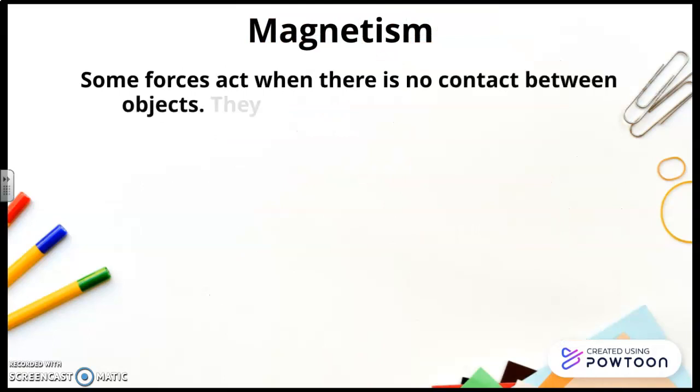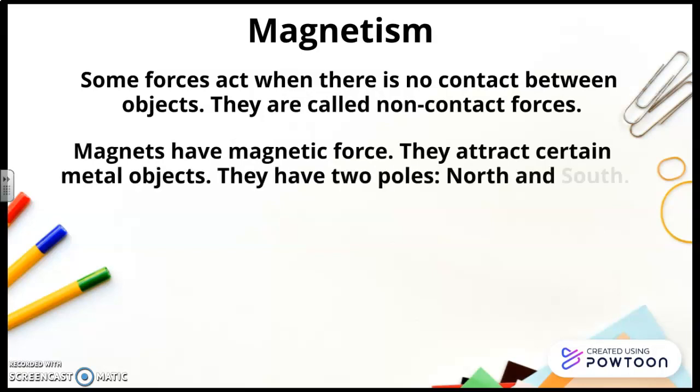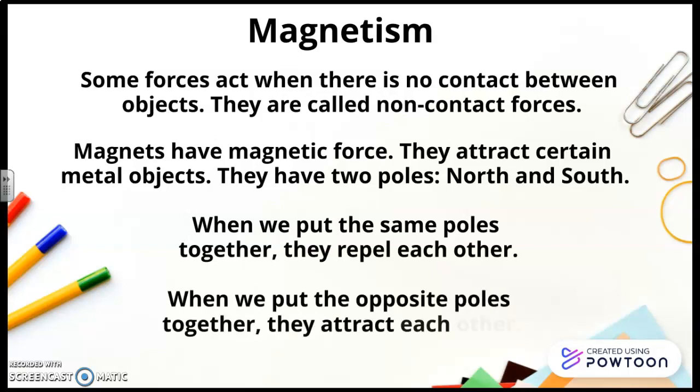Magnetism. Some forces act when there is no contact between objects. They are called non-contact forces. Magnets have magnetic force. They attract certain metal objects. They have two poles, north and south. When we put the same poles together, they repel each other. When we put the opposite poles together, they attract each other.